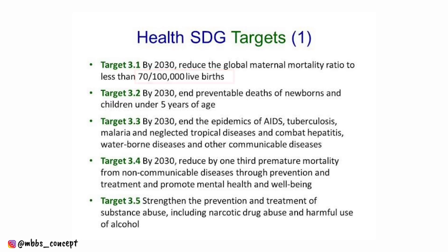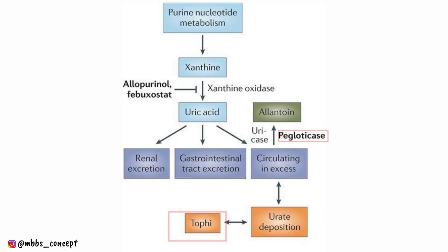Another question was on the Sustainable Development Goals, and the target for MMR was asked — it is less than 70. The next question was on the drug pegloticase; it was the same question asked in AIIMS November this year.